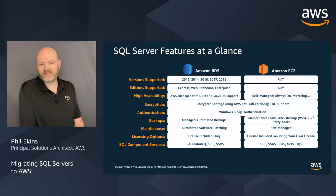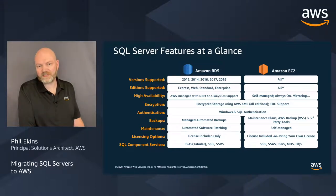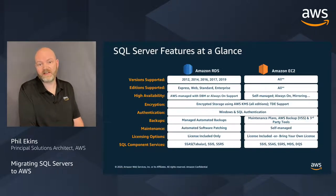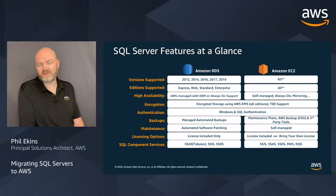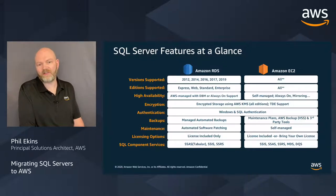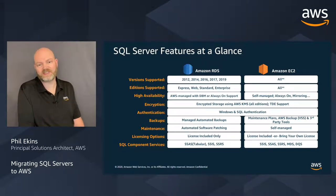On RDS, we have the four main editions: Express, Web, Standard, and Enterprise. The noticeable missing piece is Developer Edition — within RDS we can't offer that, but on EC2 you can download Developer Edition and install it on the OS yourself. A pretty common strategy is to migrate production workloads to RDS for the managed service, while migrating non-production workloads to EC2 — either Windows or Linux — to leverage Developer Edition licensing and save on licensing costs.